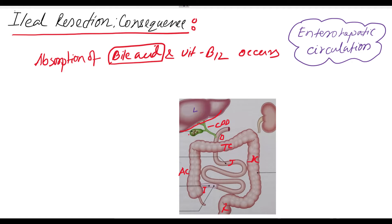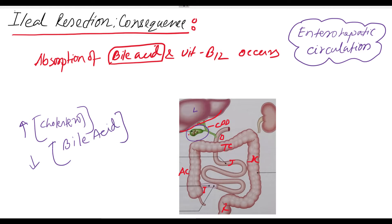However, if the bile acid is not absorbed from the terminal ileum, then in the gallbladder the cholesterol concentration will be increased in comparison to bile acid. So cholesterol concentration will be increased and bile acid concentration will be decreased. Due to the high level of cholesterol in the bile in the gallbladder, the cholesterol will precipitate and form cholesterol stones — that is called gallbladder stones. This is consequence number one of decreased bile acid absorption following terminal ileum resection.